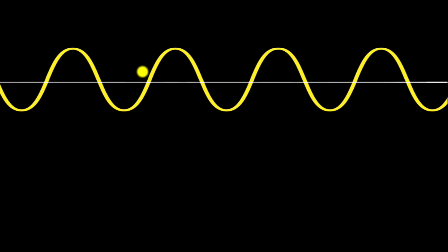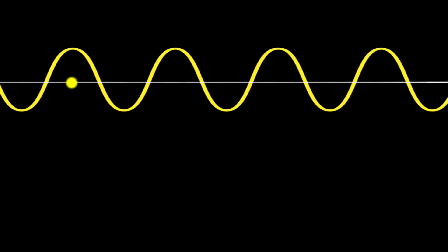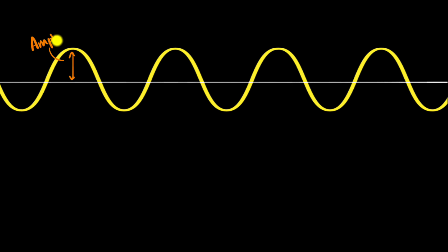So let's say this is our electromagnetic wave — remember it has both electric and magnetic fields. Imagine this represents just the electric field, and the whole wave is moving to the right. One of the key properties is how big the wave is — the height of the wave. Technically, that is called the amplitude of the wave.